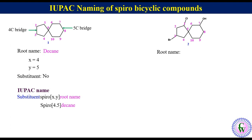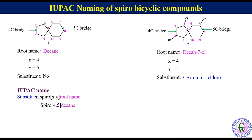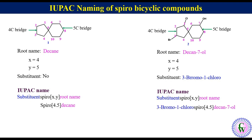Root name: since there are 10 carbon atoms in the ring with a hydroxyl group at C7, the root name will be decan-7-ol. There is a 4-carbon bridge and a 5-carbon bridge, so x = 4 and y = 5. Substituents: there is a bromo at C3 and a chloro at C1, written as 3-bromo-1-chloro. IUPAC name: 3-bromo-1-chloro-spiro[4.5]decan-7-ol.